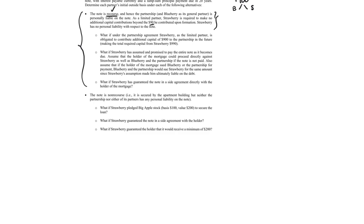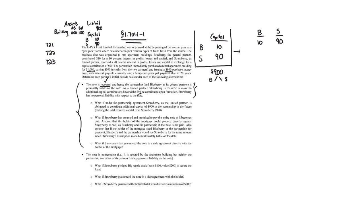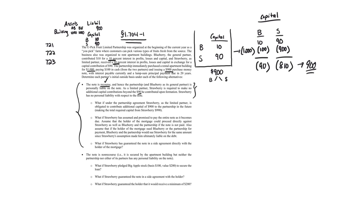Step 5 — the partnership liquidates, paying off everything according to the partnership agreement. Blueberry has a 10% interest and Strawberry has a 90% interest. Starting capital accounts are $10 and $90. The $1,000 loss is allocated 10% to Blueberry (minus $100) and 90% to Strawberry (minus $900). After the loss, Blueberry would have negative $90 and Strawberry would have negative $810, meaning Blueberry contributes $90 and Strawberry contributes $810, totaling $900 to pay off the liability.